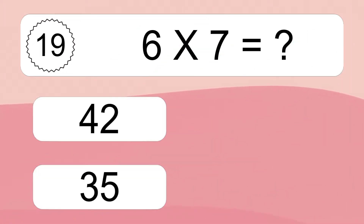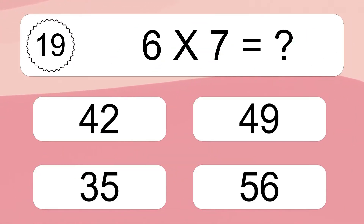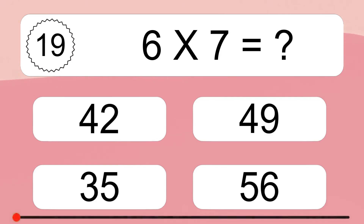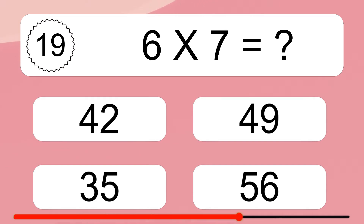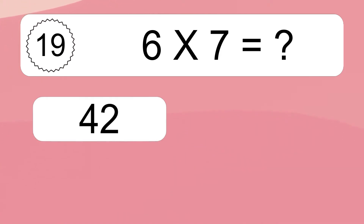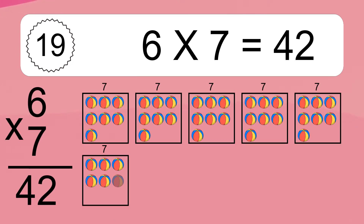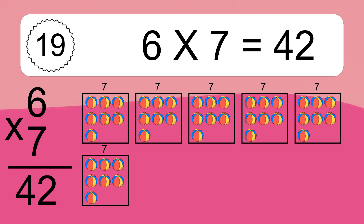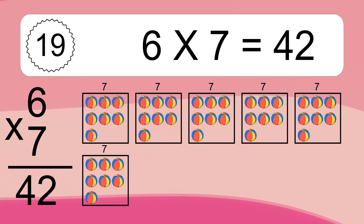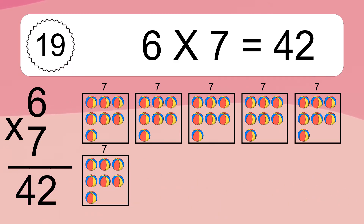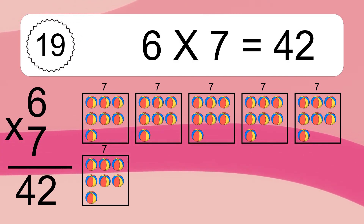6 times 7 equals what? 6 times 7 equals 42. We have 6 boxes, and each box has 7 colorful balls inside. If you count all the balls in all the boxes together, you will have 6 times 7 balls. This equals 42 balls.